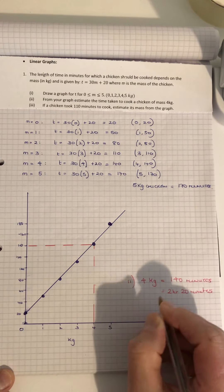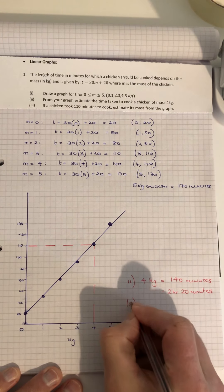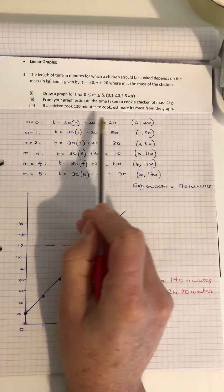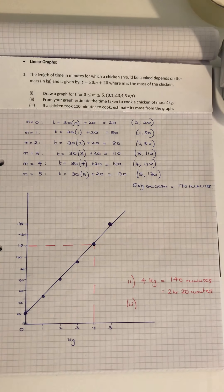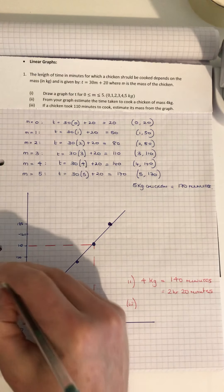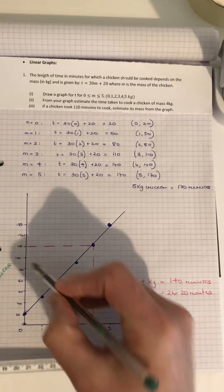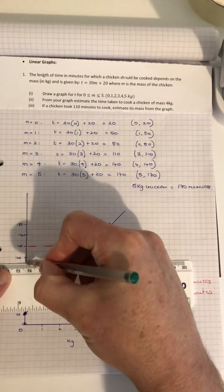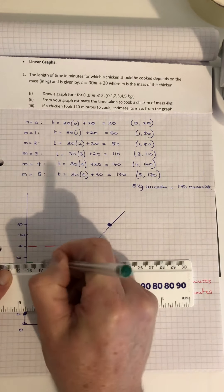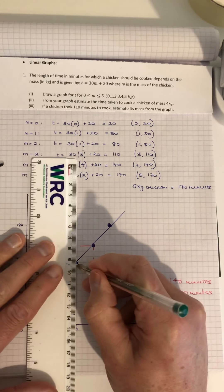Part 3: if it takes 110 minutes to cook, let's estimate the weight. I'll use a different color. These are the minutes, so 110 minutes is here. Go across to my graph at 110 minutes, and roughly, what's the weight of that chicken?